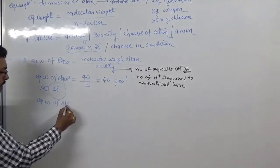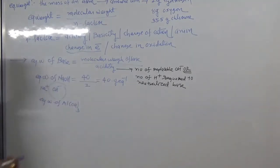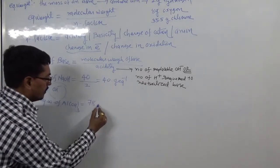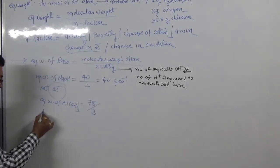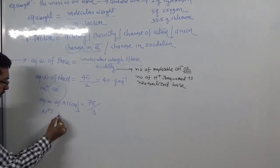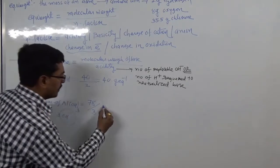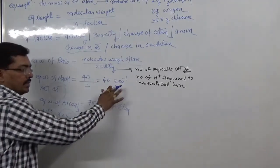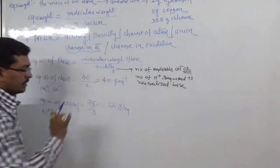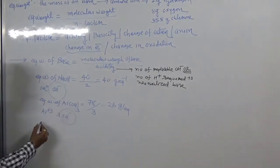For aluminium hydroxide Al(OH)₃, molecular weight is 78. It has three replaceable hydroxyl ions, so acidity is three. Therefore 78 divided by 3 gives an equivalent weight of 26 gram per mole.